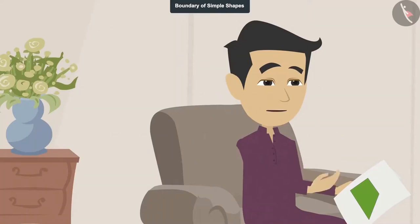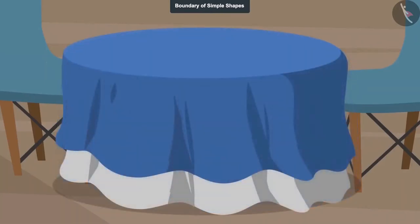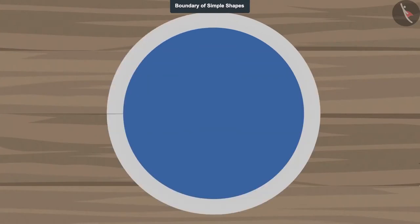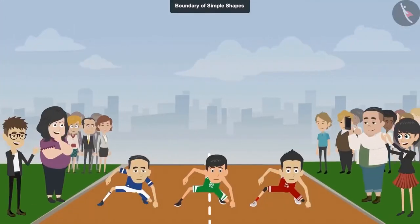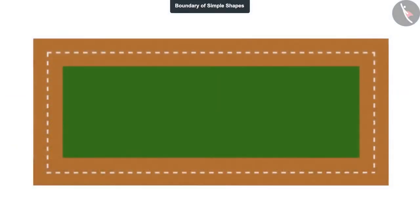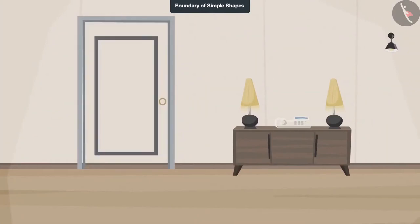Measuring a boundary is required for many things. For example, if lace is to be fixed around the tablecloth, then we have to measure the boundary of the tablecloth. In the race track, it is necessary to measure the boundary of the track when there is a race of vehicles or people. A special kind of wooden frame is also put around the door. For that, it is necessary to measure the boundary.